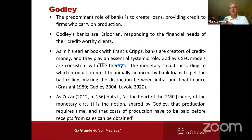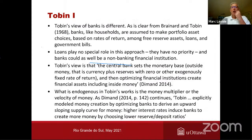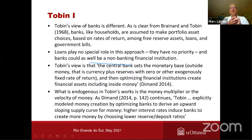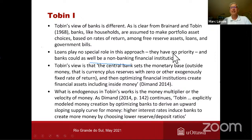Banks are really important because they provide the loans that allow production firms to get going. Banks are not there primarily as an intermediary between savers and borrowers — that's not their main purpose. Tobin's view of banks is quite different. As is clear from Brainard and Tobin, banks — like households — are assumed to make portfolio asset choices based on rates of return among free reserve assets, loans, and government bills. So banks seem to be like households, just improving the choice that households can make between different assets. In this approach, loans play no special role — they have no priority. Banks could as well be a non-banking financial institution.